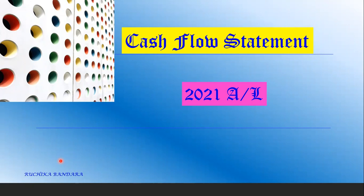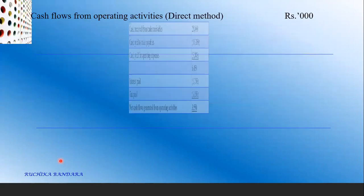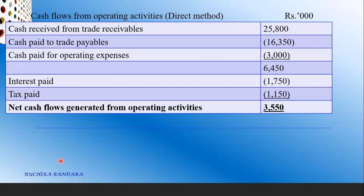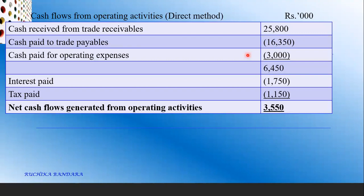When it comes to the direct method, there is a specific format. Here we write: cash received from trade receivables, cash paid to trade payables, cash paid for operating expenses, then interest paid, and tax paid. The interest paid and tax paid section is common for the indirect method as well. These three entries are very important for the direct method, and to get these answers, we have to open up small T accounts — five T accounts in total, because all five values must be calculated using a T account.